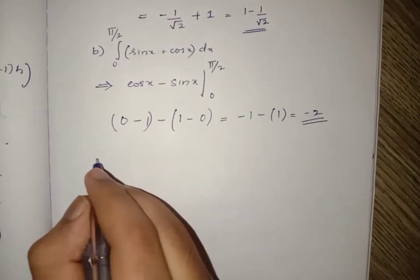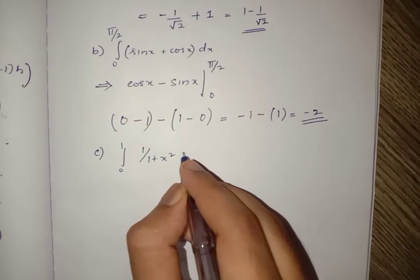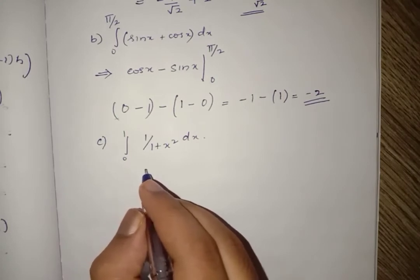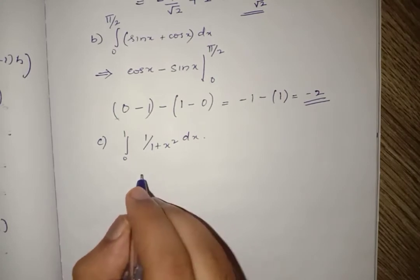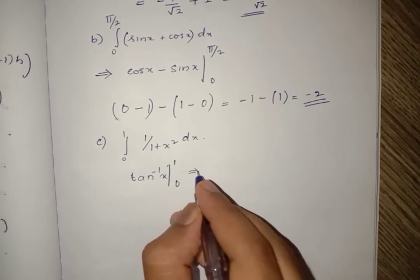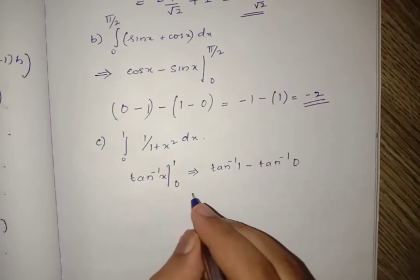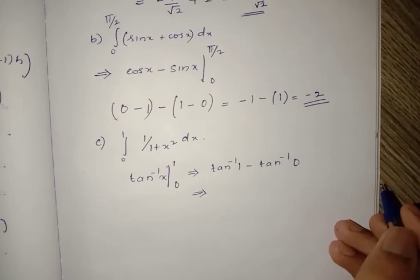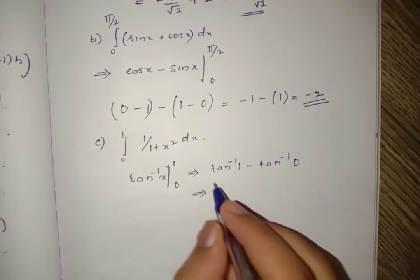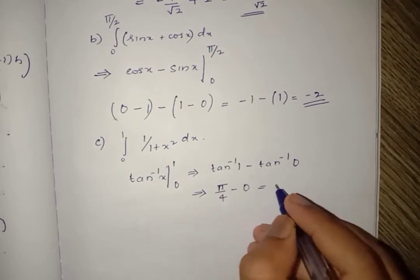Let us move to part C: integral from 0 to 1 of 1/(1 + x²) dx. We know that the integral of 1/(1 + x²) is tan⁻¹(x). So we evaluate [tan⁻¹(x)] from 0 to 1, which is tan⁻¹(1) - tan⁻¹(0). In the range 0 to π/2, tan⁻¹(1) = π/4 and tan⁻¹(0) = 0, giving the answer π/4.